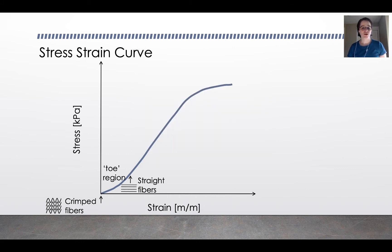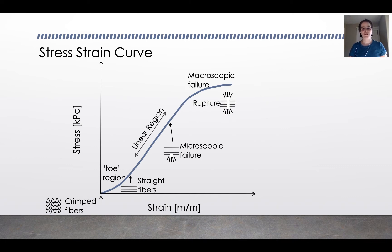After you get through the toe region, you get a linear region on the stress strain curve, just like you have on a traditional engineering material or like we saw in bone. And then you eventually, at the top of the linear region, start to experience microscopic failure of the tendon, of the collagen fibrils. And then as you get into the plastic deformation region at the top, you start to experience macroscopic failure of the collagen fibrils.